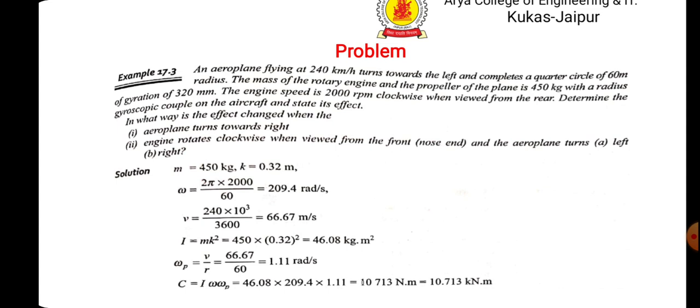R is the radius of curvature. So, I have calculated the gyroscopic couple, which is I omega into omega p. Now, it is given that the rotor is moving in the clockwise direction when viewed from the rear. So, first, you will have to calculate the effect when aeroplane turns towards right.